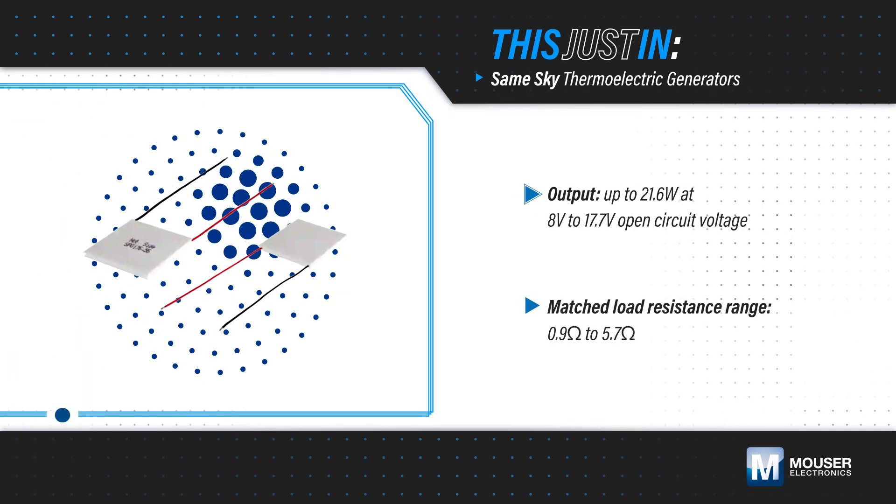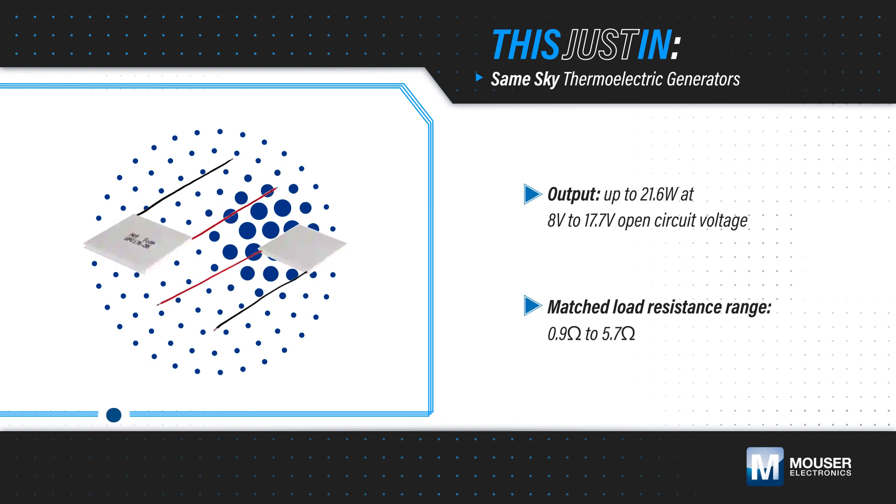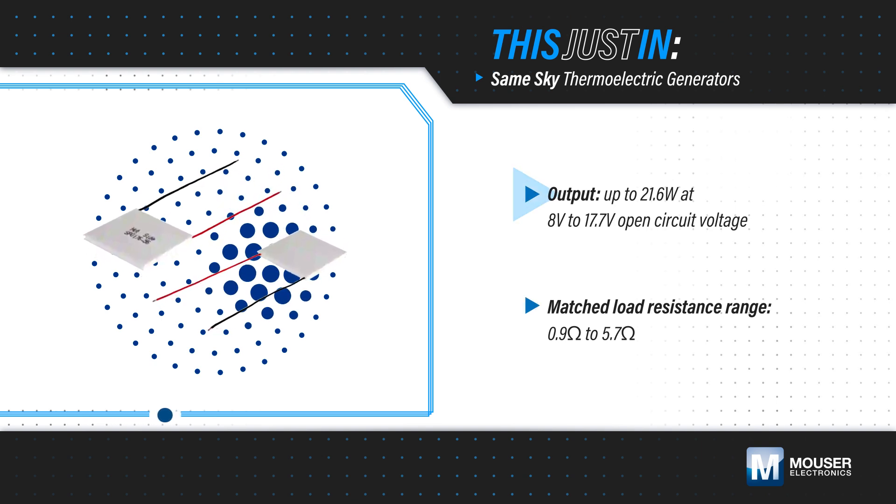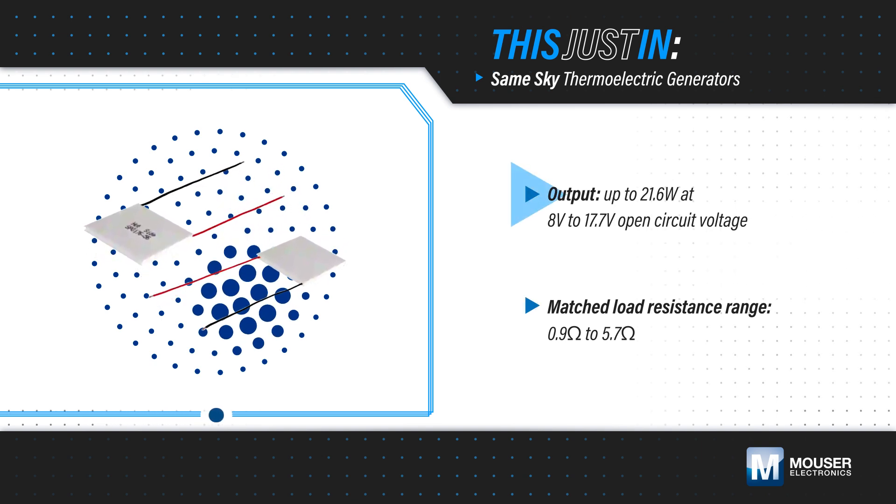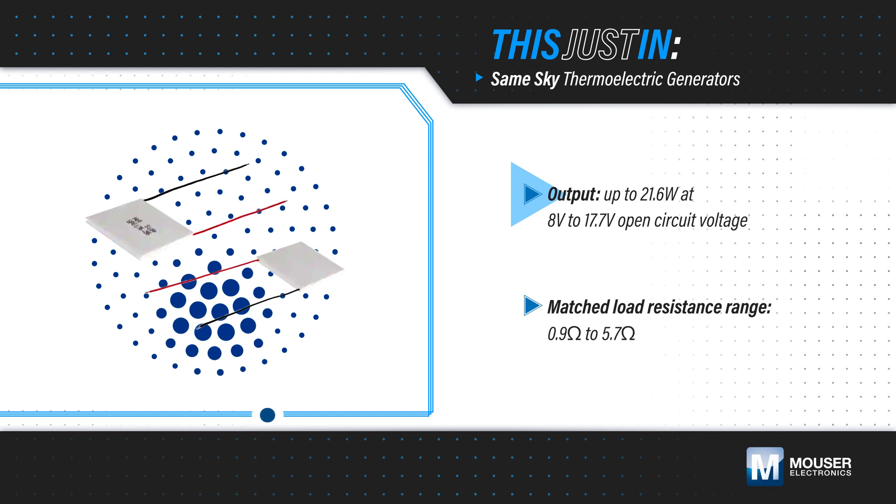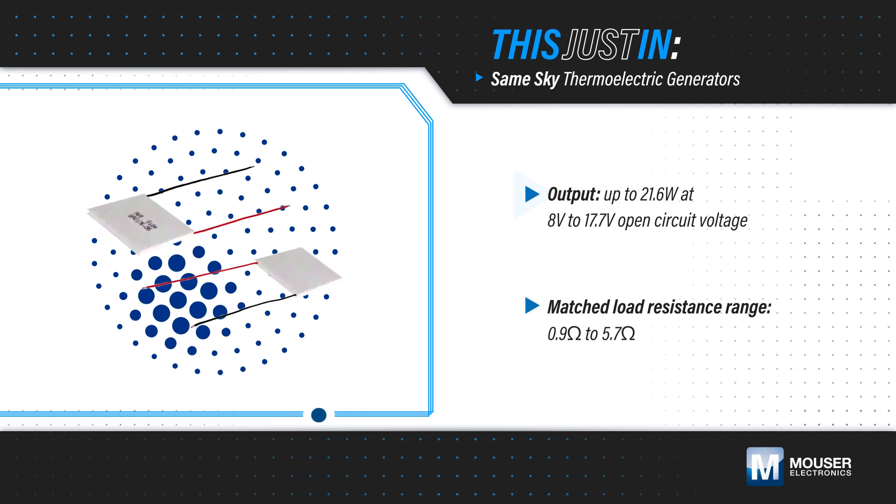Same Sky Thermoelectric Generators, or TEGs, available from Mouser Electronics, can provide up to 21.6 watts of output power and are available with open circuit voltages from 8 to 17.7 volts.